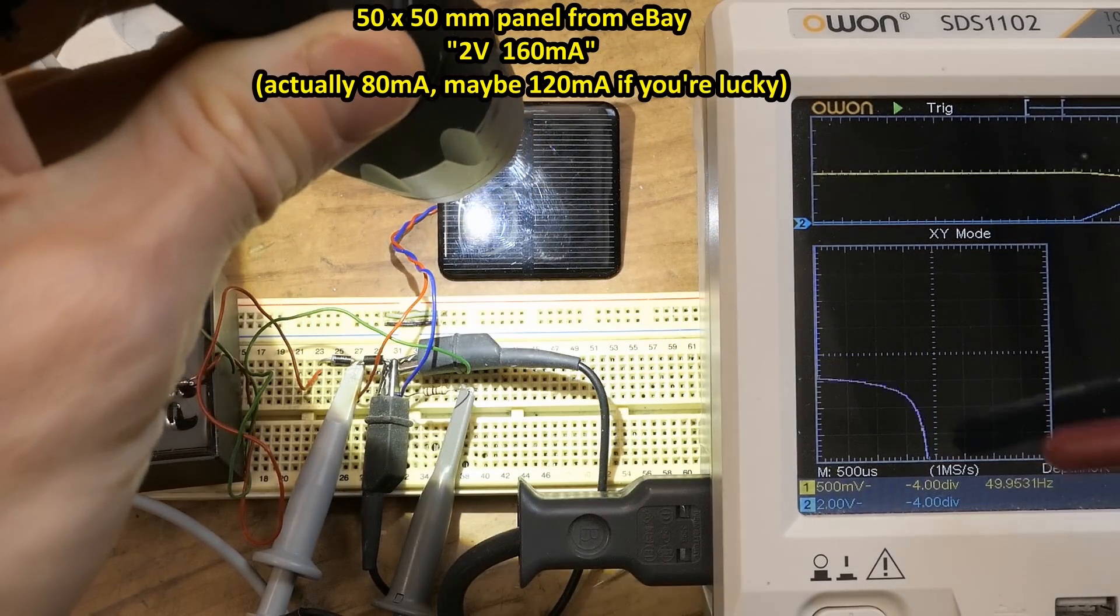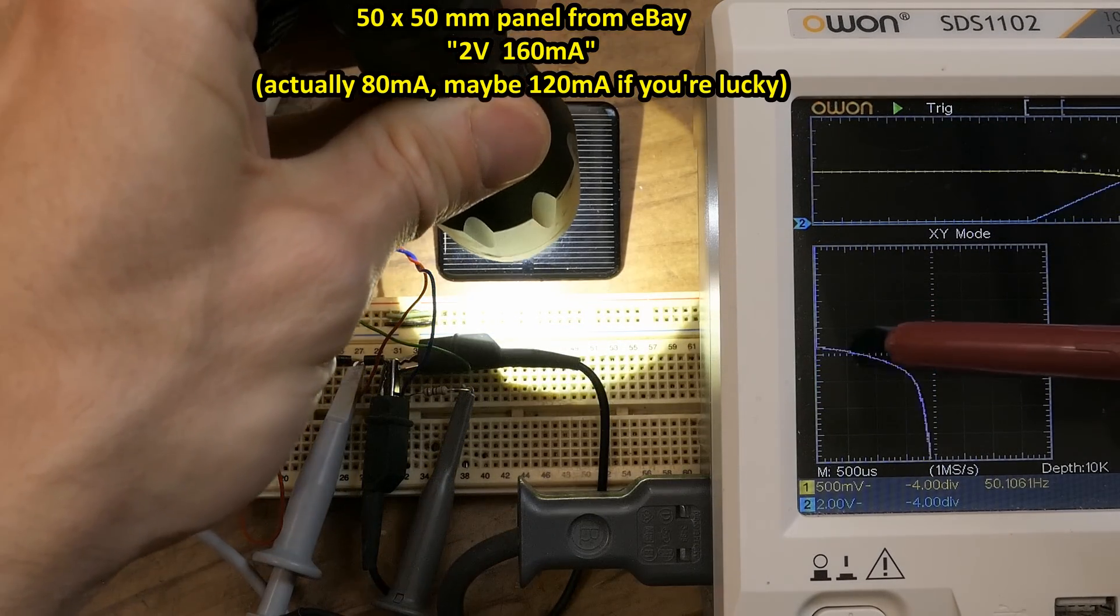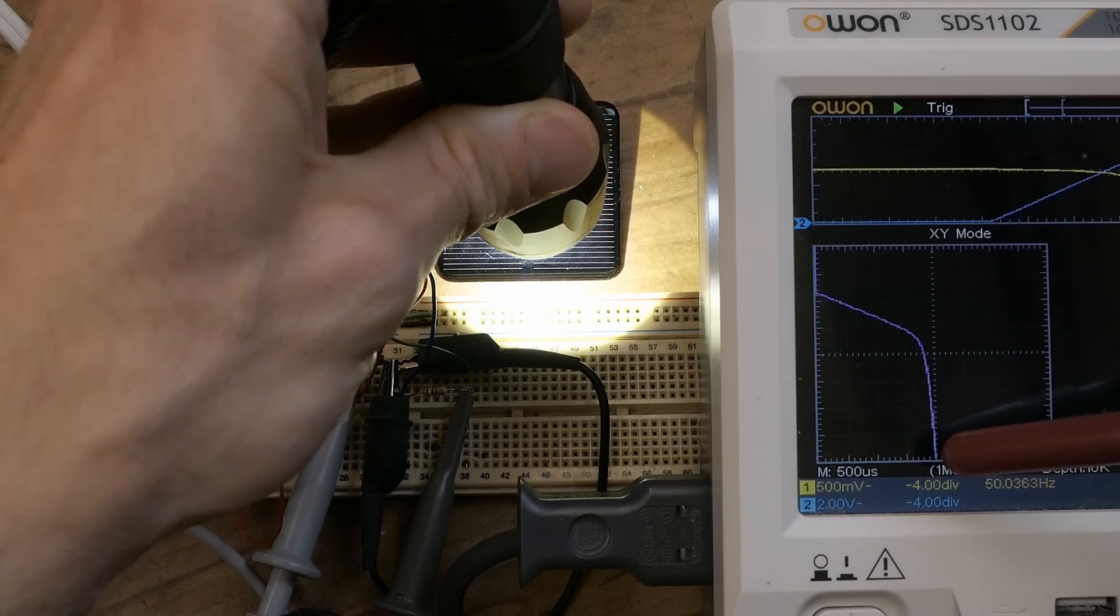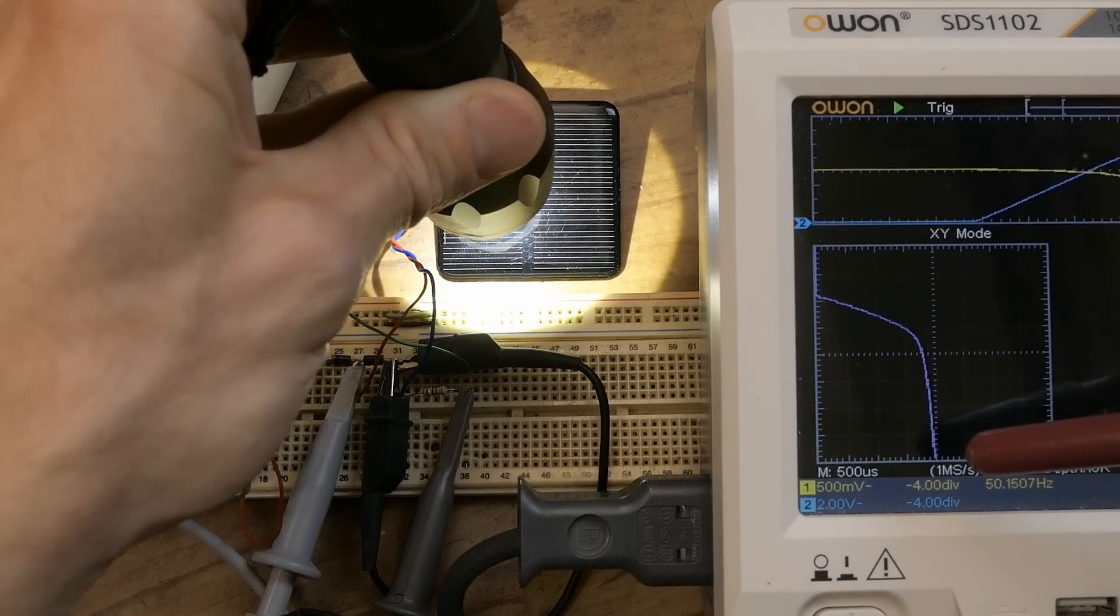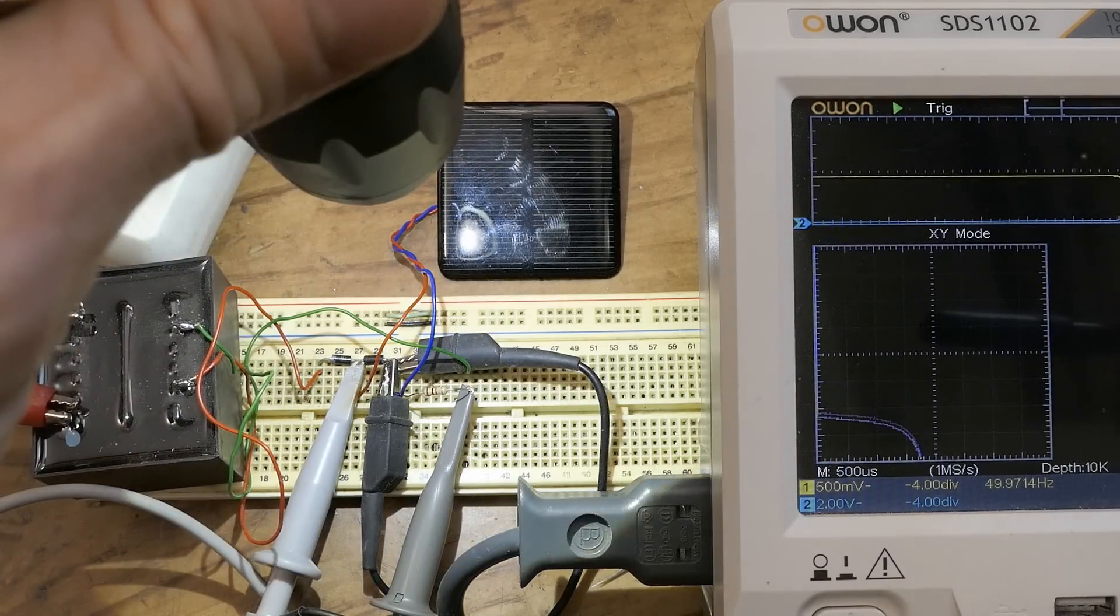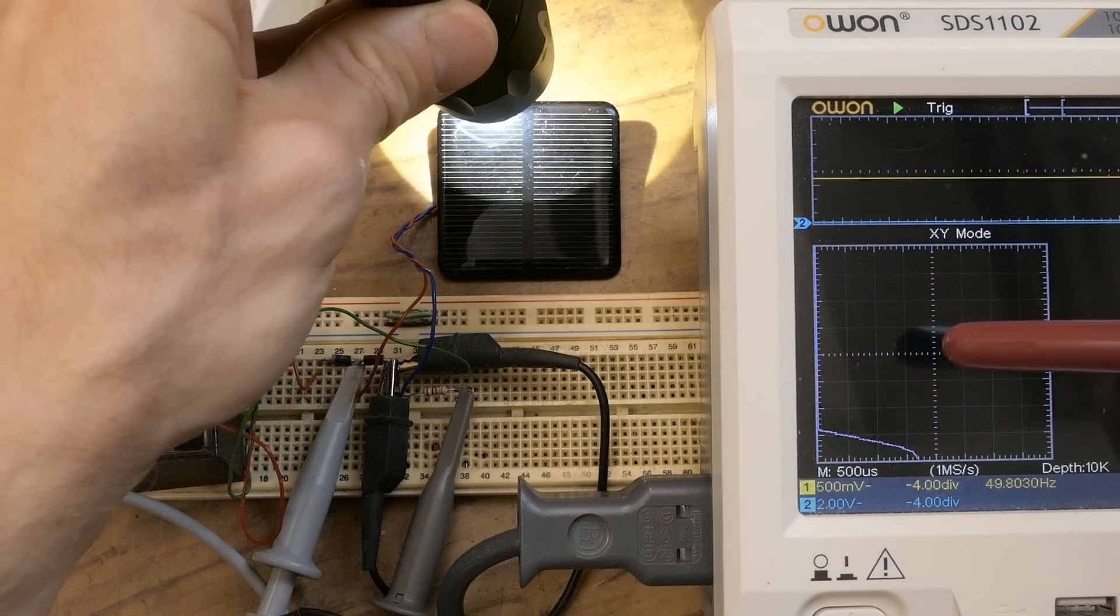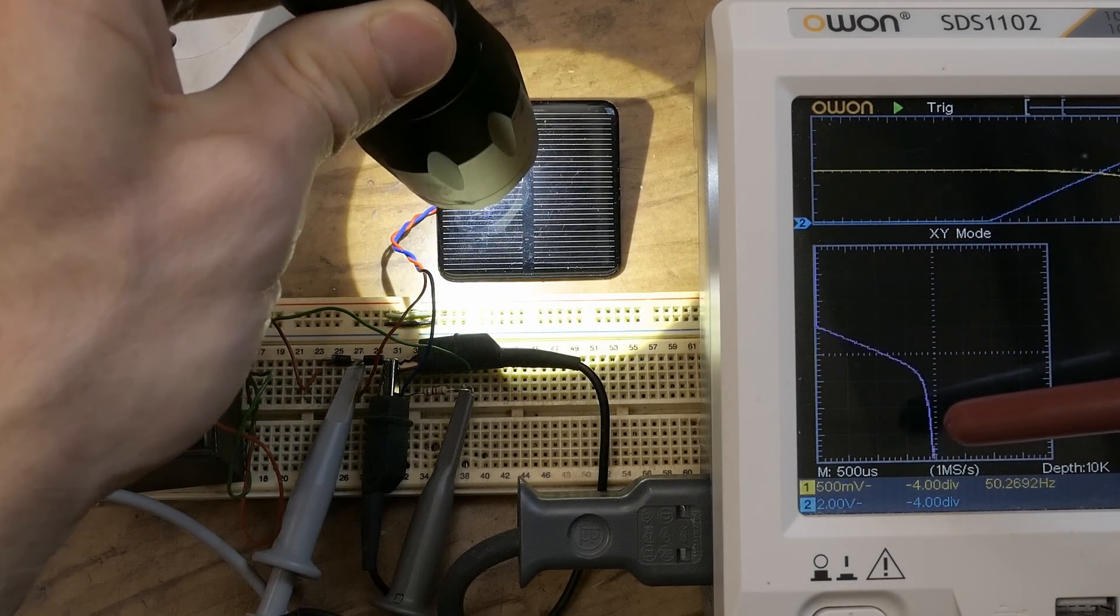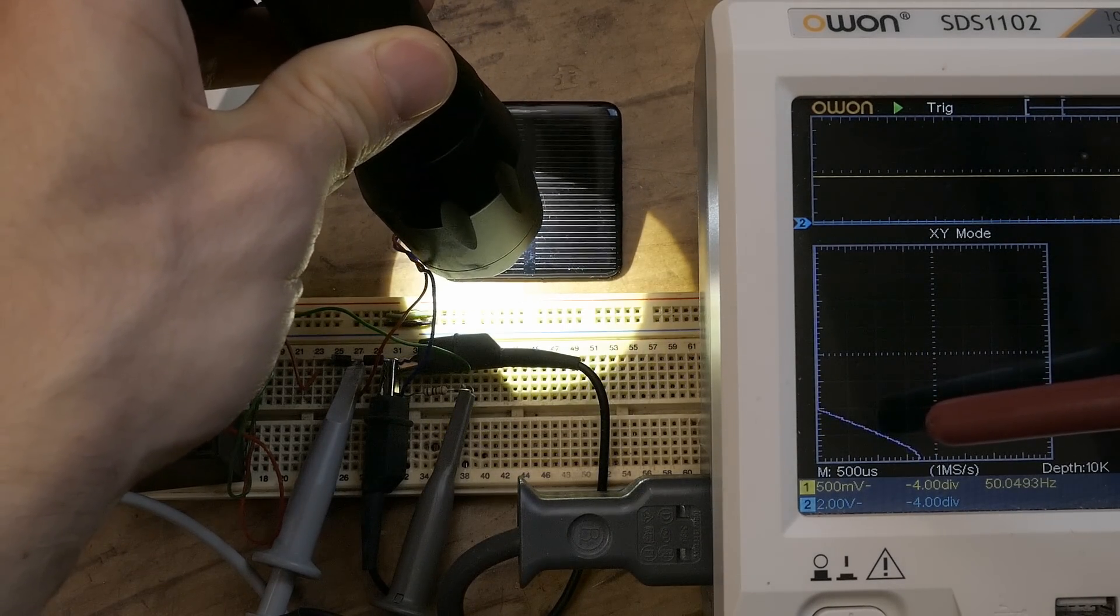And you can see the current increases with more light quite a lot. The current is on the vertical axis and the voltage is on the horizontal end. The voltage actually doesn't seem to change that much with the illumination, whereas the current changes quite a lot. And when I illuminate just part of it, it seems to change the shape somehow. The slope is much steeper when just some cells of the panel are actually illuminated.